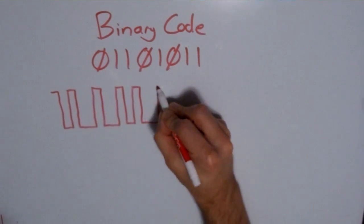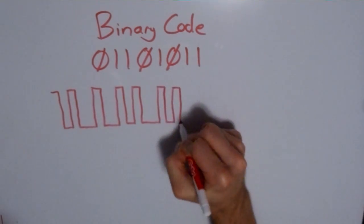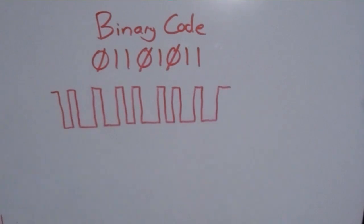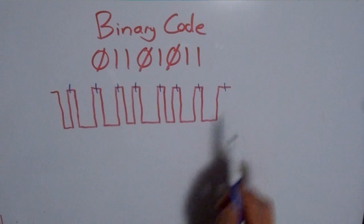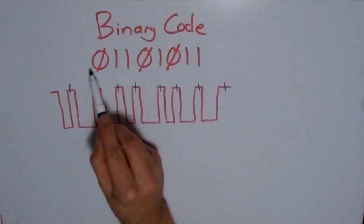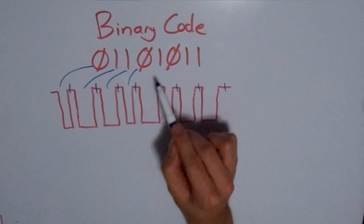If you were to draw a waveform that represented this binary code, it would look something like this. These blue slashes indicate where the digits would be separated. You can see that the zero is represented by a short pulse, and the ones are represented by a long pulse.